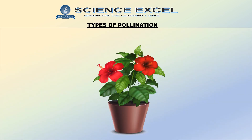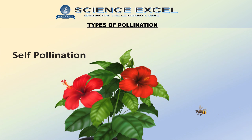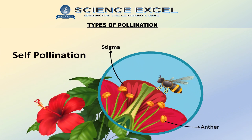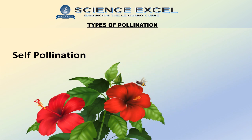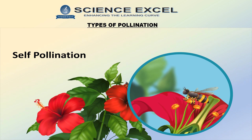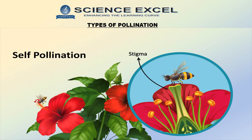Now, do you know what are the different types of pollination? Let me explain. Self-pollination is the transfer of pollen grains from the anther of a flower to the stigma of the same flower, or from the anther of a flower to the stigma of another flower on the same plant.